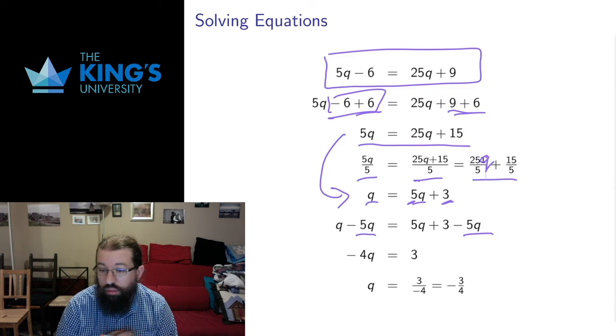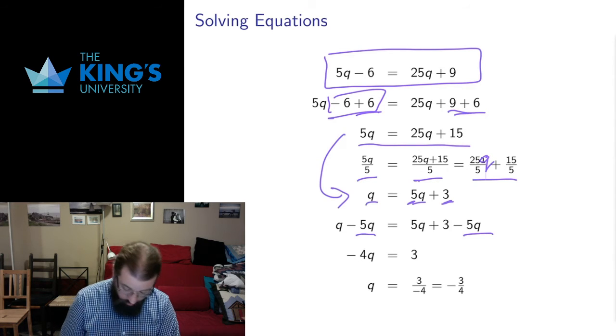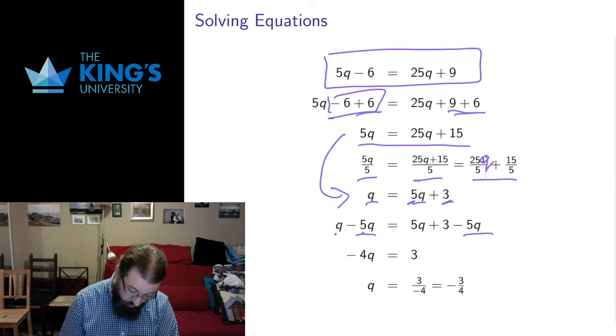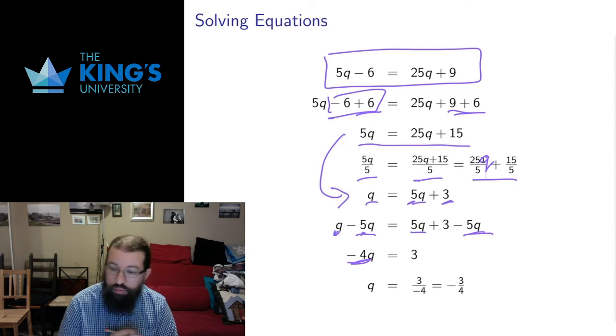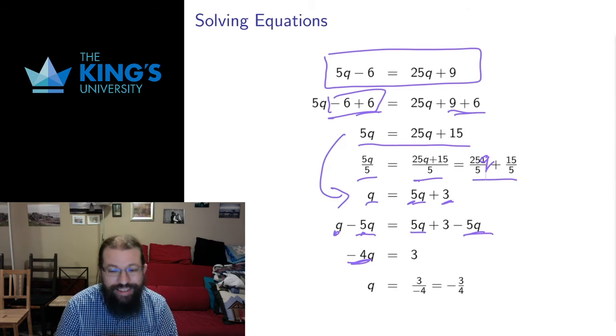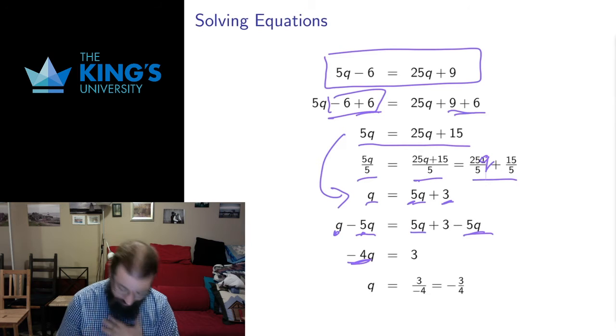On the right side, q minus 5q - I have one thing, I have minus 5 of them, that gives me minus 4 of them. Here, 5q minus 5q, subtract anything from itself and it goes away. So I just get 3.